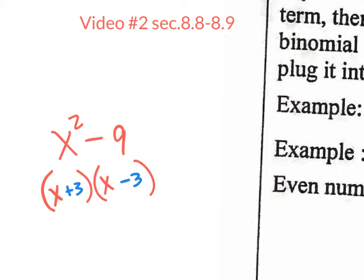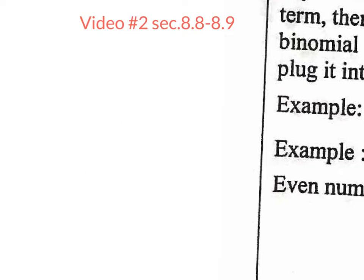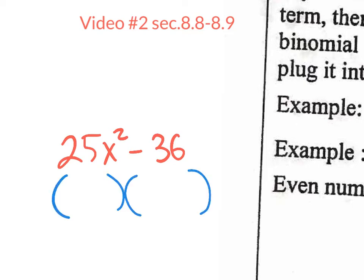I probably wouldn't use the shortcut for something like x squared minus 9 — I'd just say what times what is negative 9 that adds to nothing. But if I were to write something like 25x squared minus 36, then I'd recognize a perfect square term in front and a perfect square term in back, and I know the middle term has to cancel out. So I apply the shortcut: square root of 25x squared is 5x, square root of 36 is 6. Put 5x and 6 on both binomials. Since there is no middle term, one has to be a plus, one has to be a minus. It doesn't matter which one you put first, as long as the signs are different. Is that hard? Heck no. It's super easy.